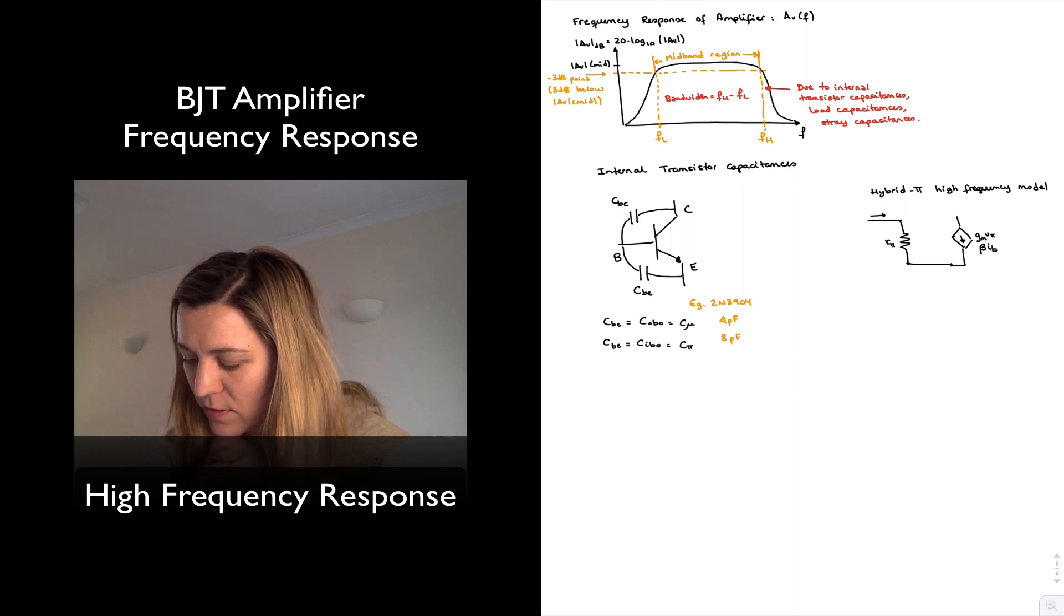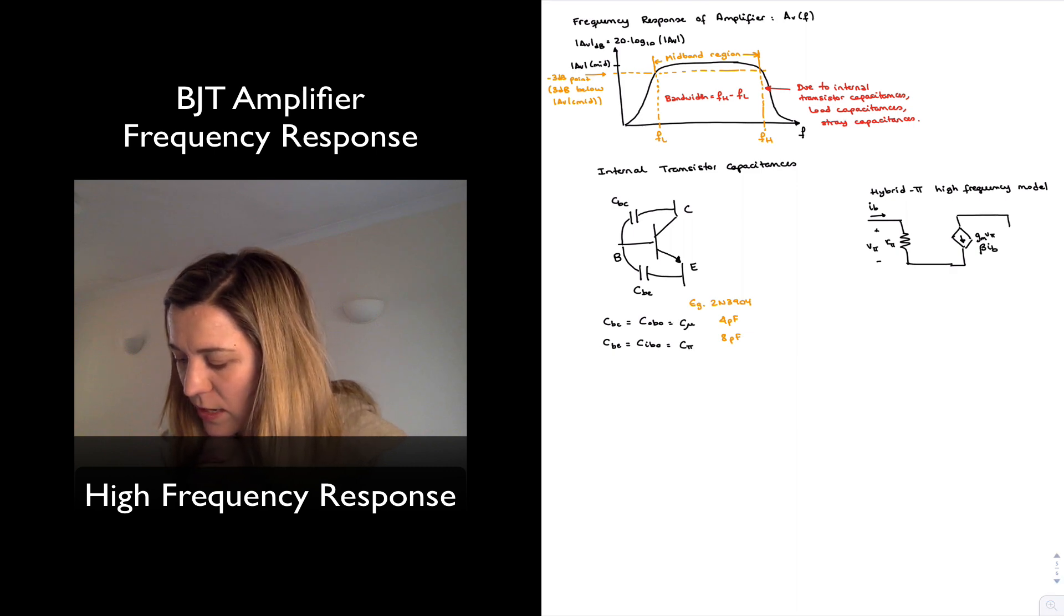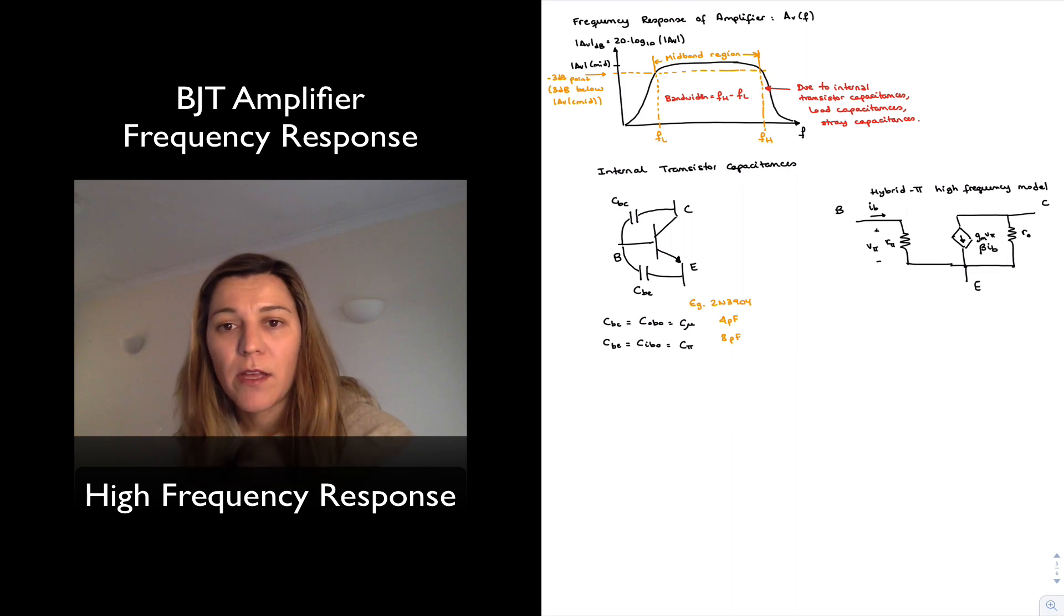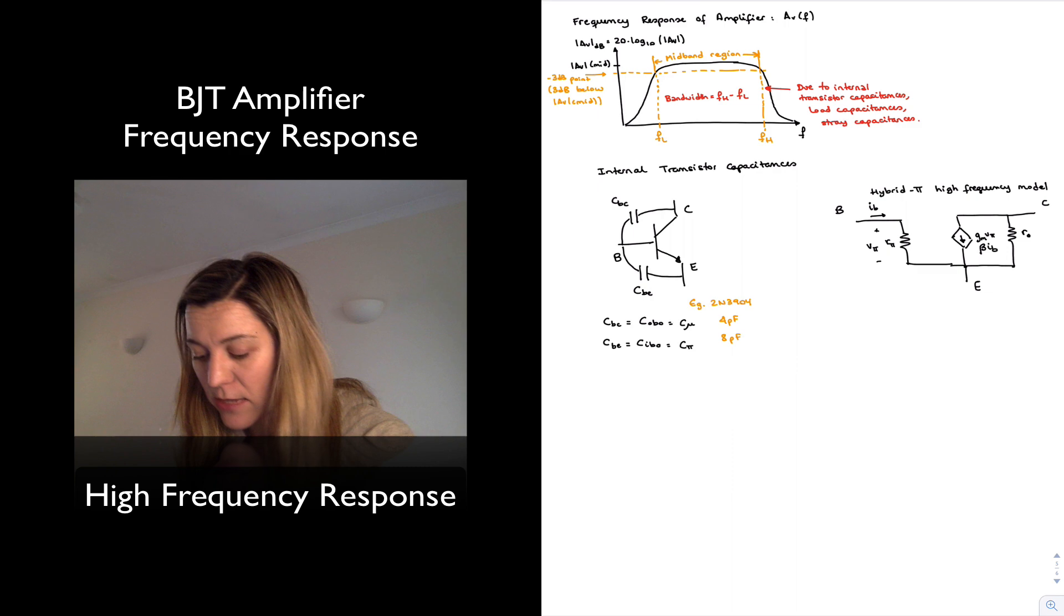ib being the current flowing to the base, v pi being just the voltage across the r pi resistor. And then we had little arrow. This is collector, that is base, and this is emitter.